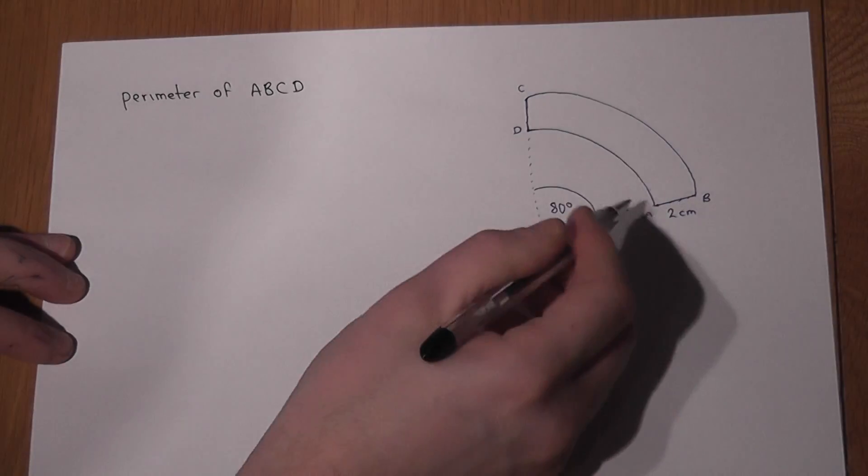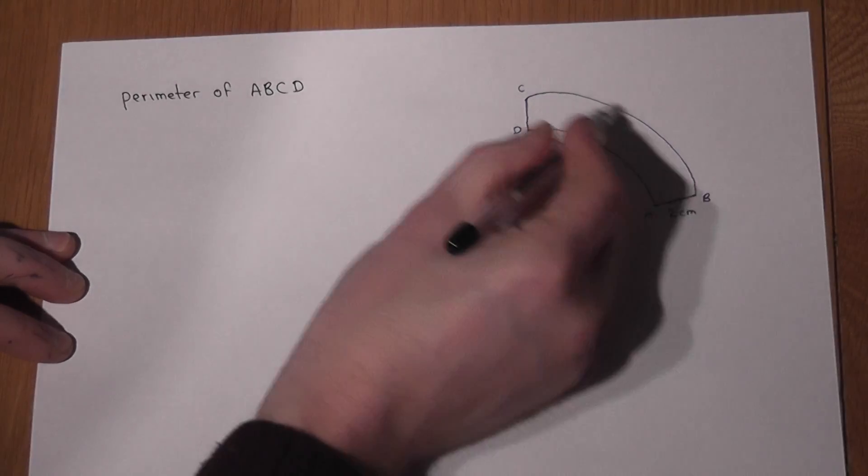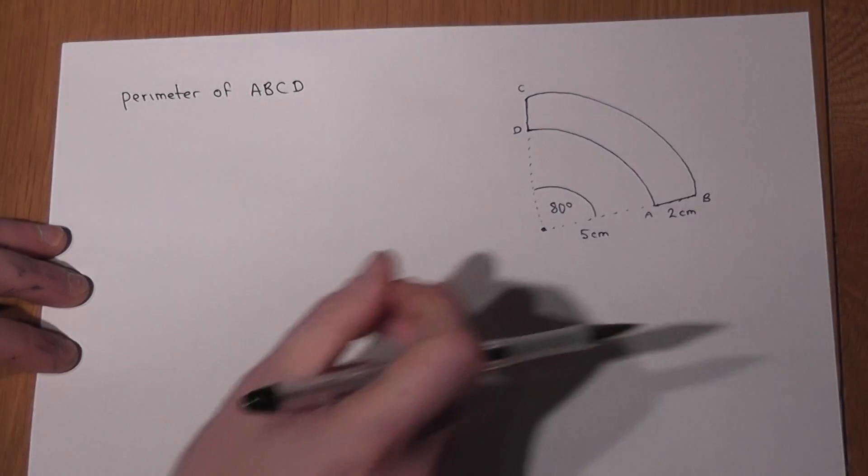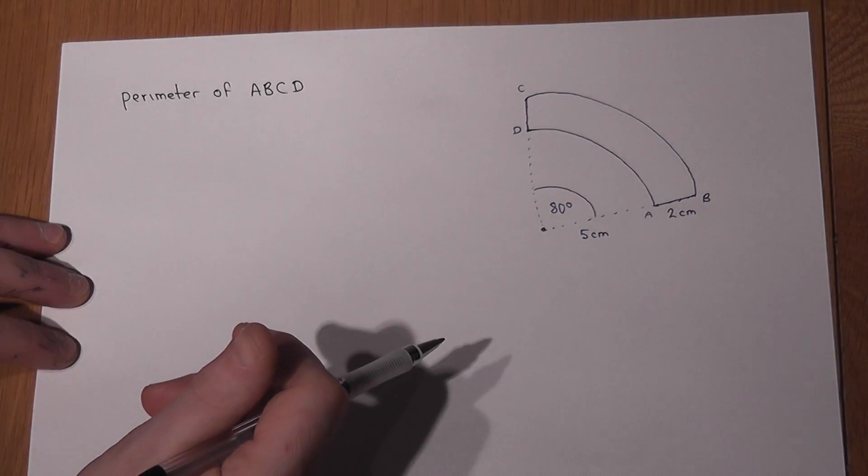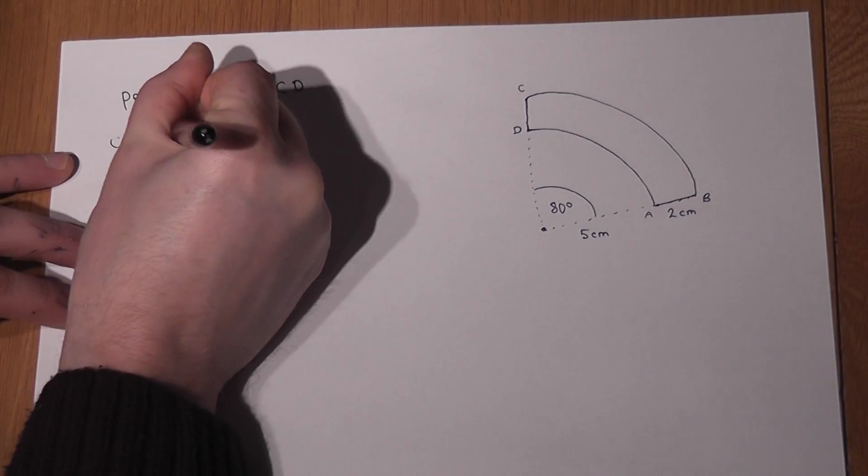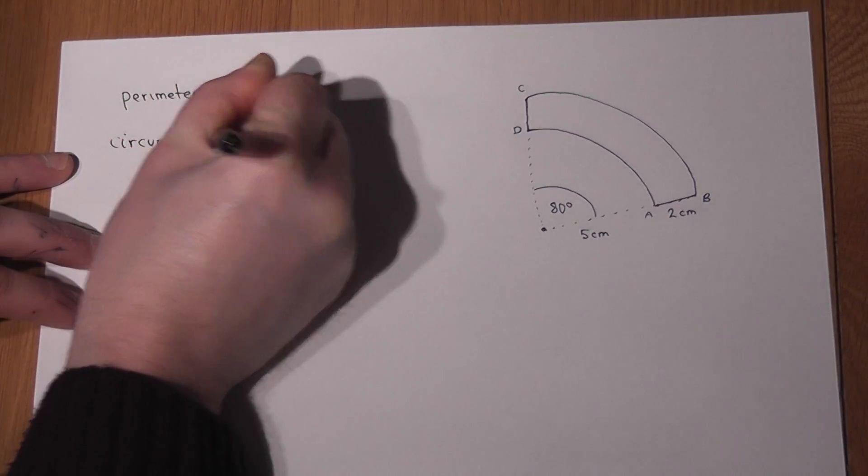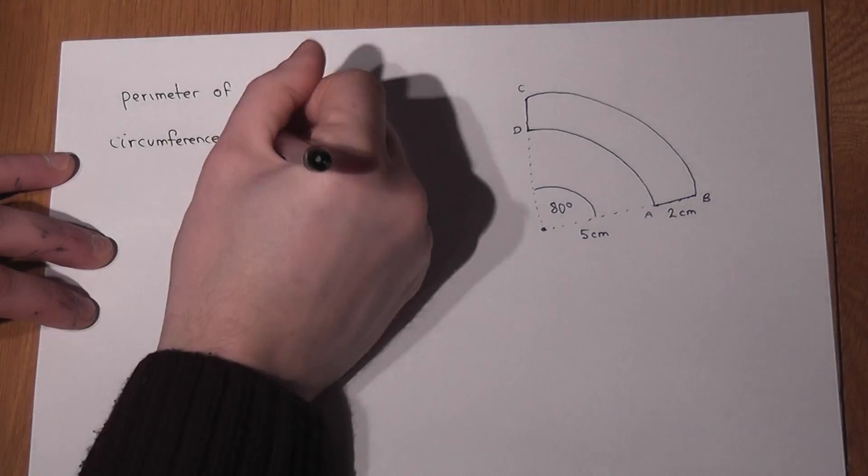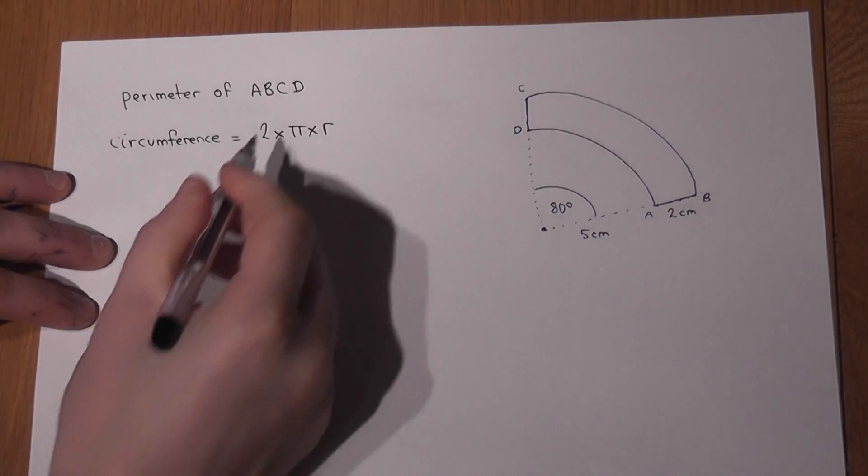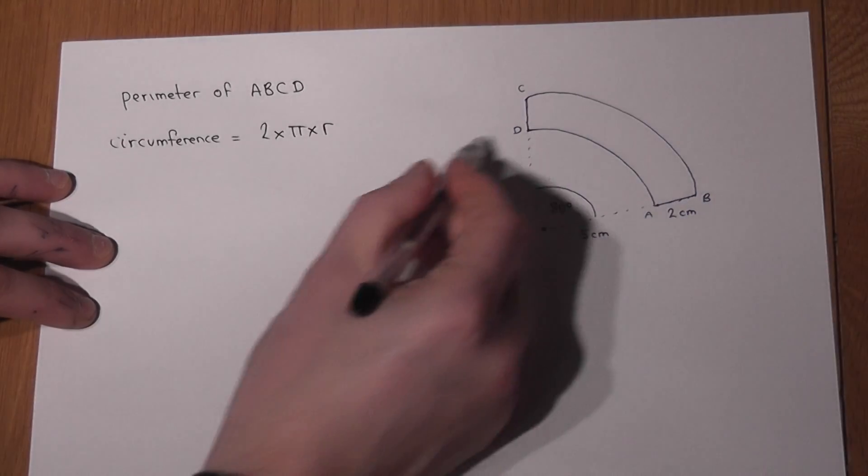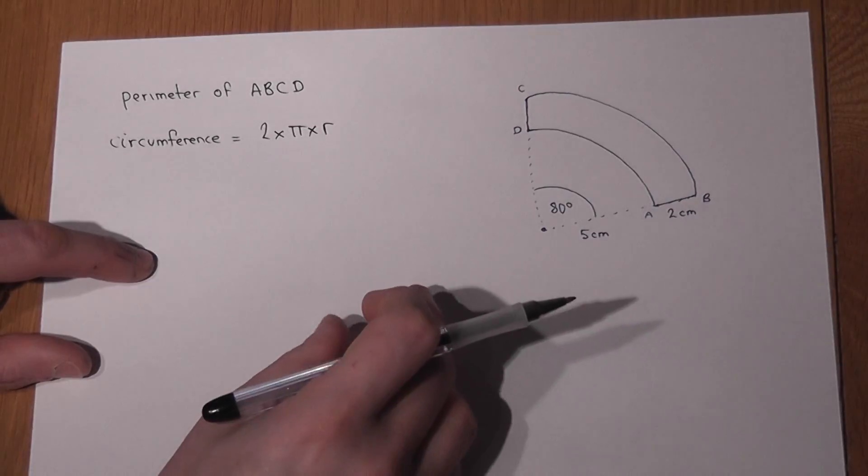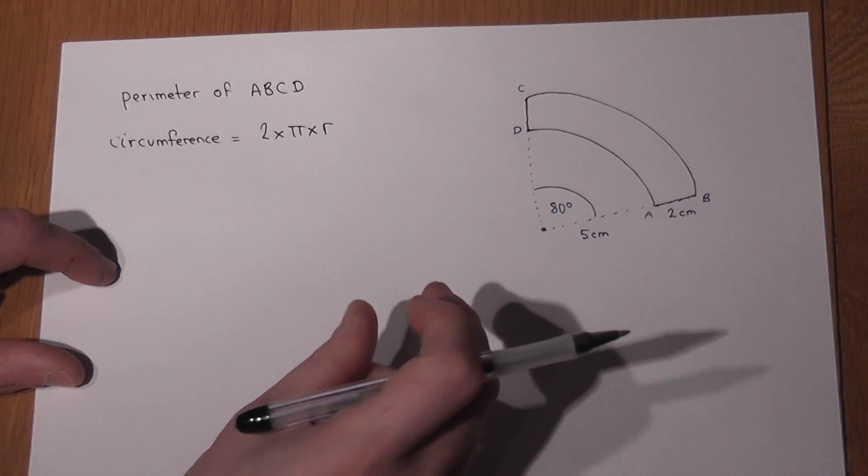And to find the perimeter we're going to find out the two arc lengths to start off with. Now the key thing here is that a sector is just a part of a circle. And for a full circle the entire circumference is just pi times diameter or 2 times pi times radius. So that will find an entire length around a circle. But these two lines are just a fraction of a full circle.